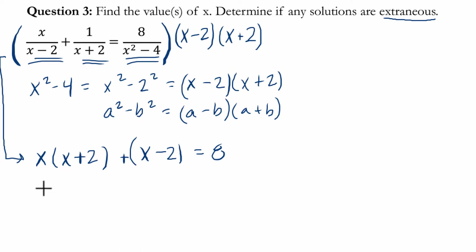So now we're solving this equation and we get x squared plus 2x. I'm distributing this x to both terms. Plus x, minus 2. And then we'll subtract 8 on both sides. And that will equal 0.